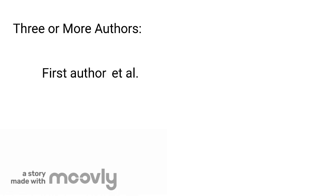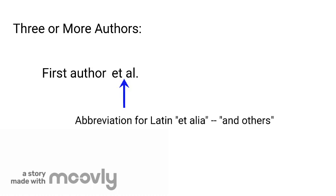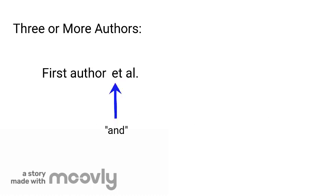Finally, sources written by three or more authors always include the first author with the Latin abbreviation 'et al.,' which stands for 'et alia' and means 'and others.' Note that 'et' is a complete word and does not require a period after it. However, 'al' is an abbreviation for 'alia' and thus requires a period after it.